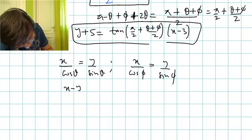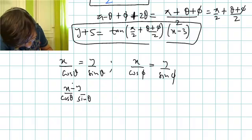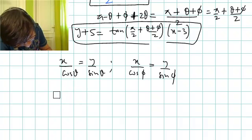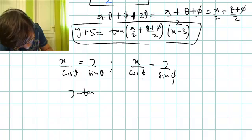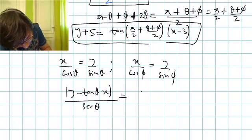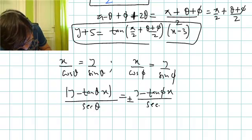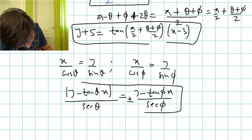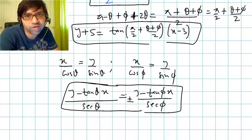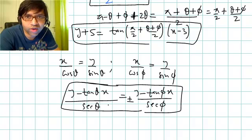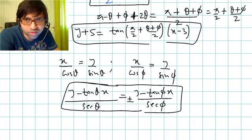Applying the bisector result: (y minus tan theta times x) divided by sec theta equals plus or minus (y minus tan phi times x) divided by sec phi. There is no need for absolute value since we use plus or minus. These give the two bisector equations when the lines are shifted to the origin. Then we shift them back: three units right and five units down.